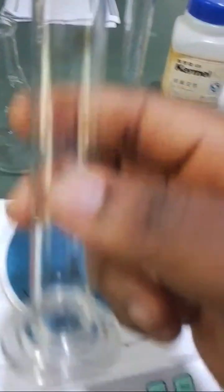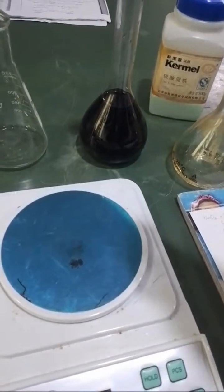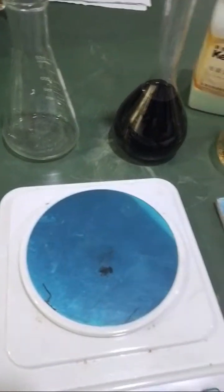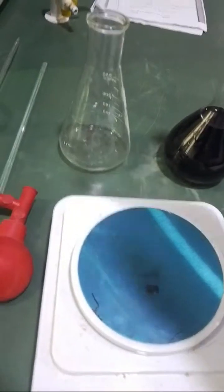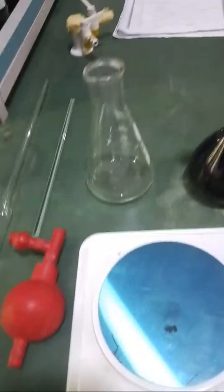So you use your measuring cylinder to measure between 10 cm³ or 20 cm³ of your concentrated tetraoxosulfate. You add it to the iron(II) solution and then you prepare it.